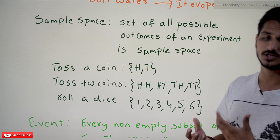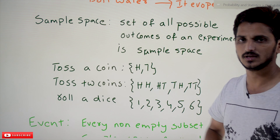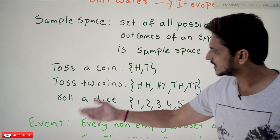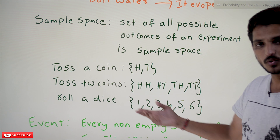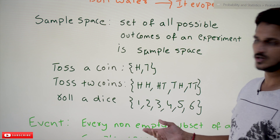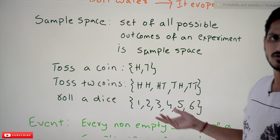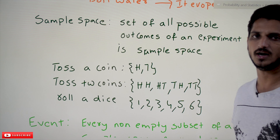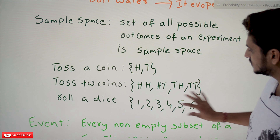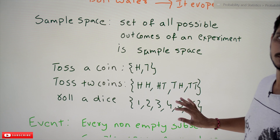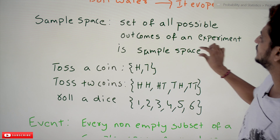These are the possible outcomes you get if you toss two coins. The third example: roll a die. What are the possible outcomes? 1, 2, 3, 4, 5, 6 — any one you are going to get. These are all the possible outcomes, and that is what we call sample space.